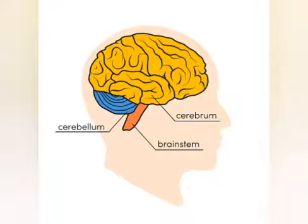The next part is the cerebellum. The cerebellum is situated below the cerebrum and it is responsible for muscle coordination and maintaining the balance of our body. Next is the medulla, which is also called the brain stem.